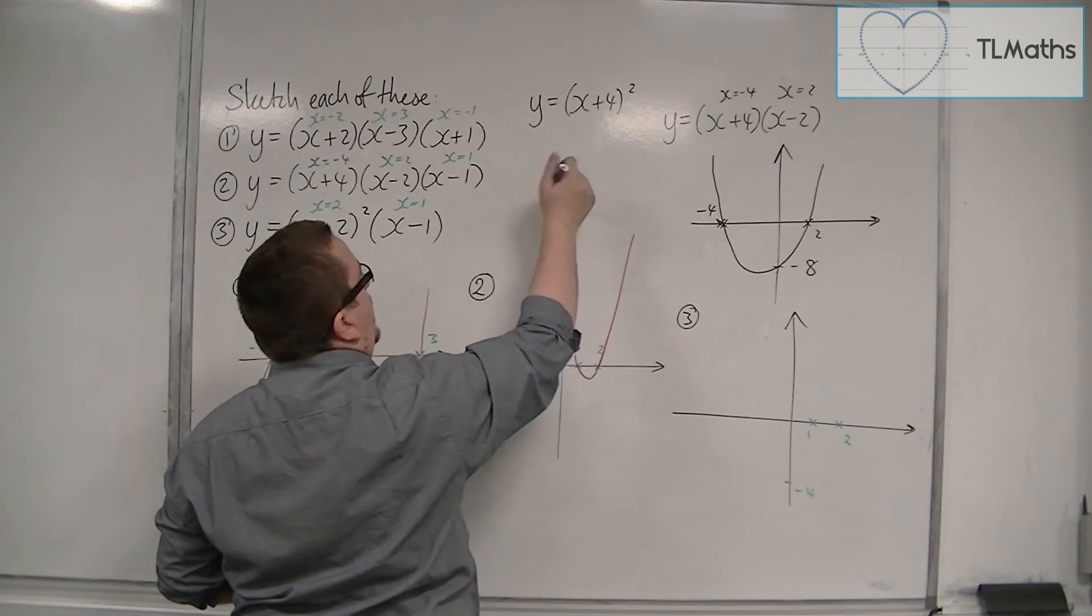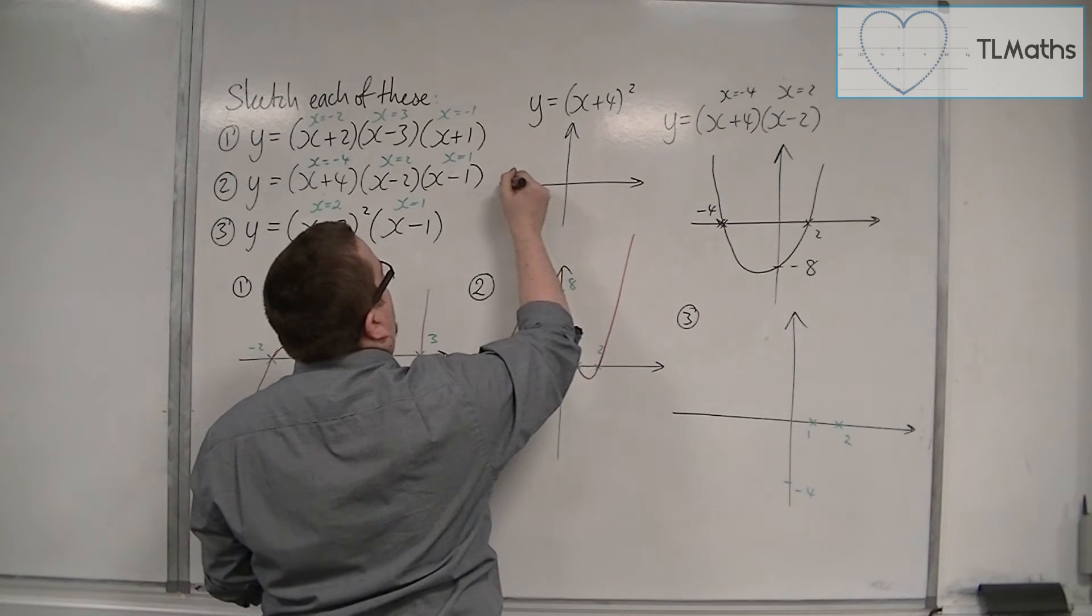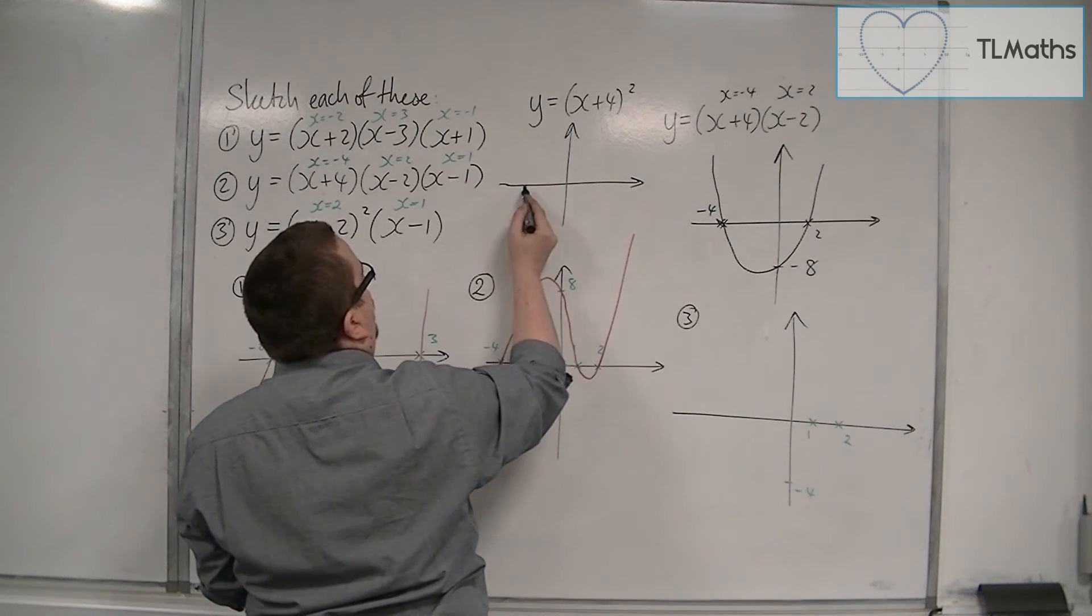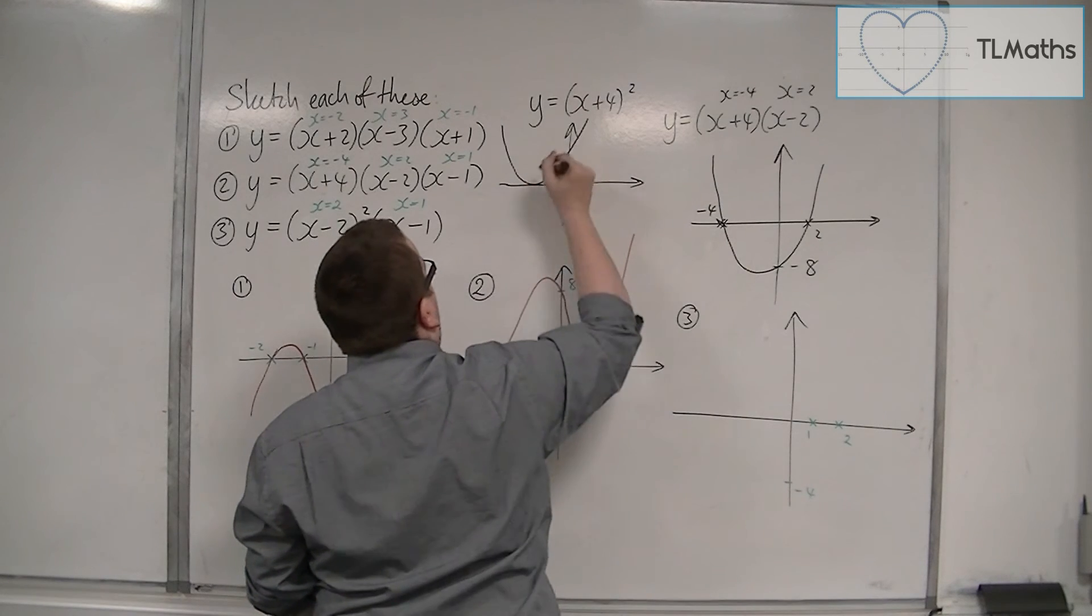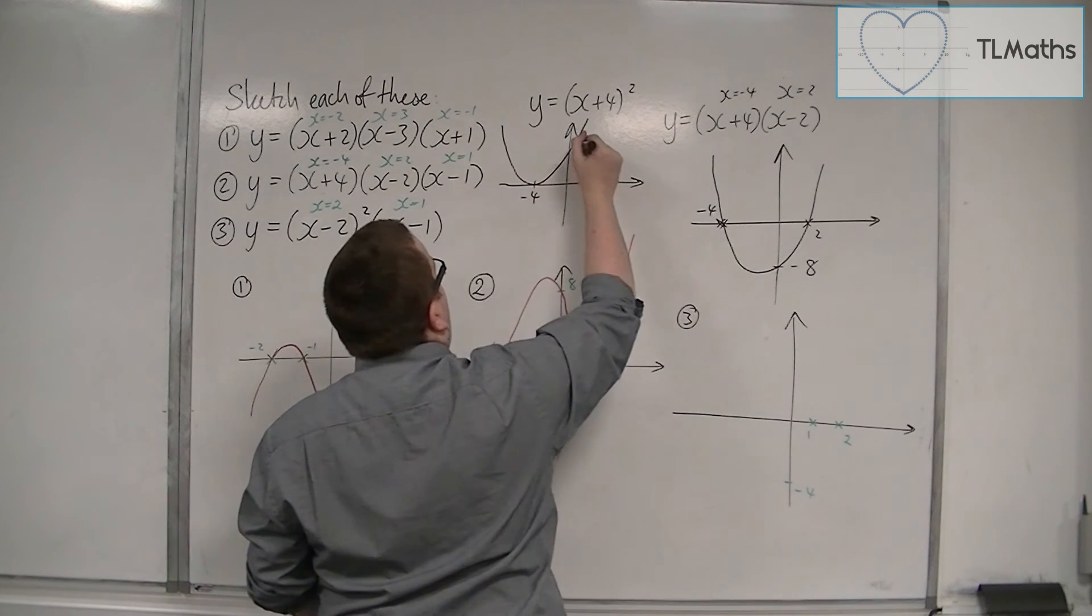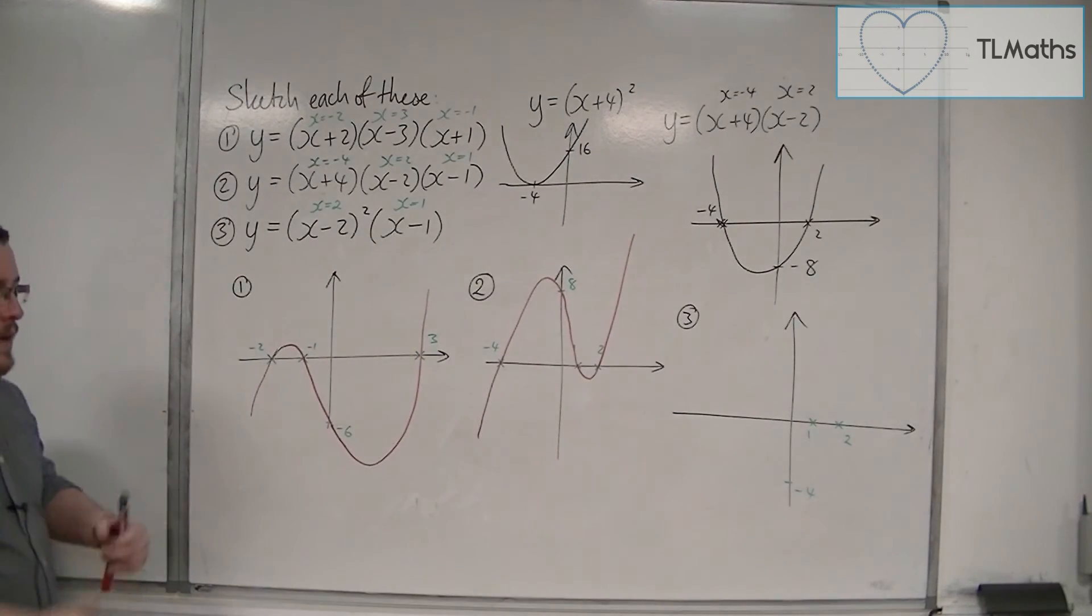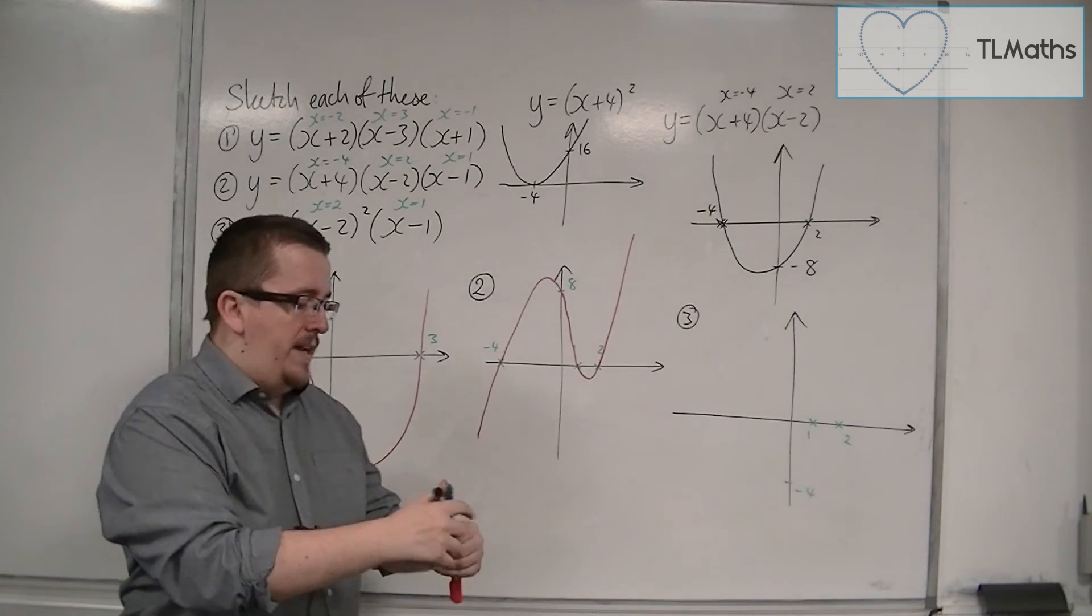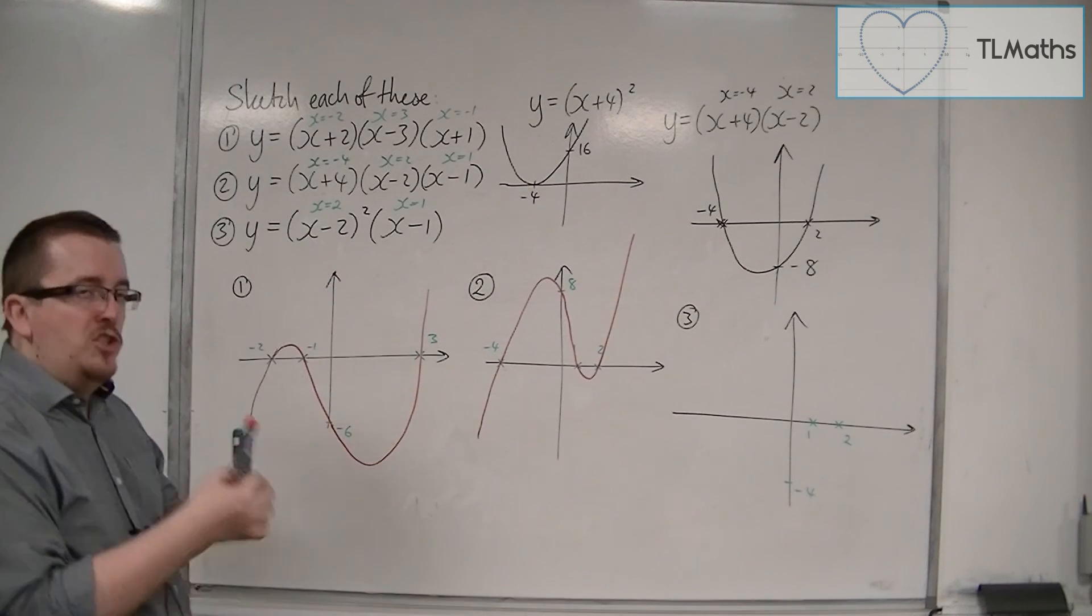I know that is crossing the x-axis at minus 4, but the parabola brushes the x-axis at minus 4. So in exactly the same way, the cubic brushes the x-axis at 2.